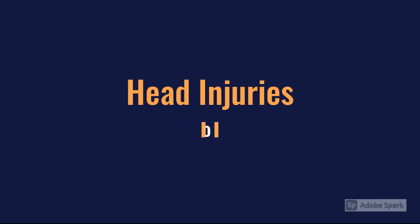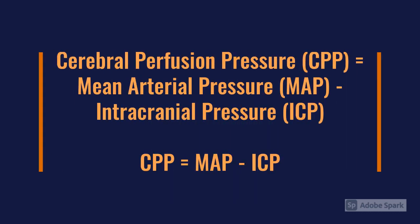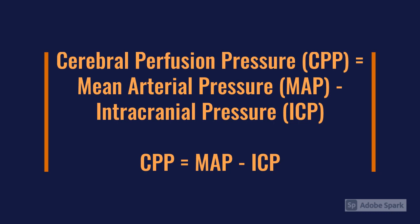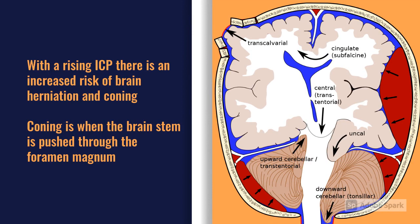The key physiology to understand before discussing management is that cerebral perfusion pressure equals mean arterial pressure minus intracranial pressure. If you raise your intracranial pressure, your mean arterial pressure has to rise too to maintain cerebral perfusion pressure. However, mean arterial pressure can only rise to a certain point, so there's a window for intracranial pressure before it gets too high. Beyond that, MAP can no longer rise to maintain perfusion pressure, and herniation of parts of the brain occurs — uncal herniation, tentorial herniation.